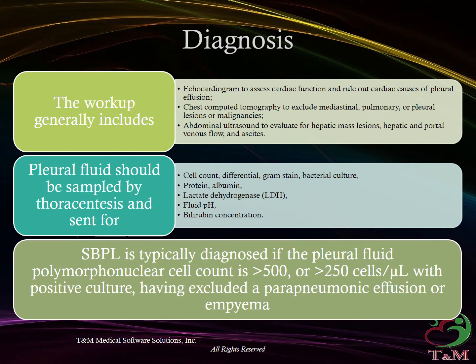SBPL is typically diagnosed if the pleural fluid polymorphonuclear cell count is greater than 500, or greater than 250 cells per microliter with positive culture, having excluded a parapneumonic effusion or empyema.